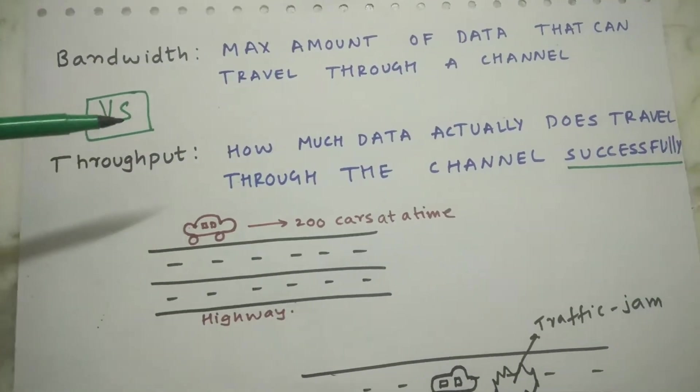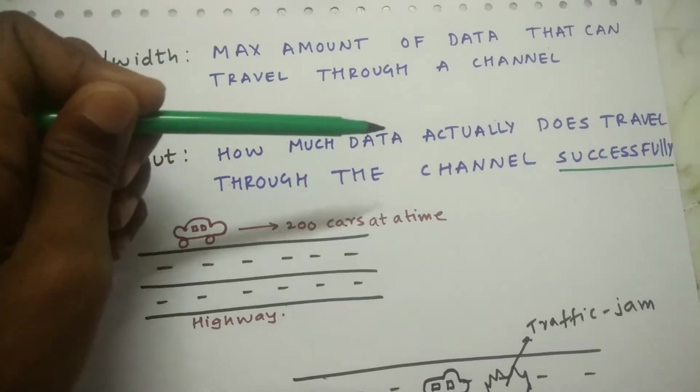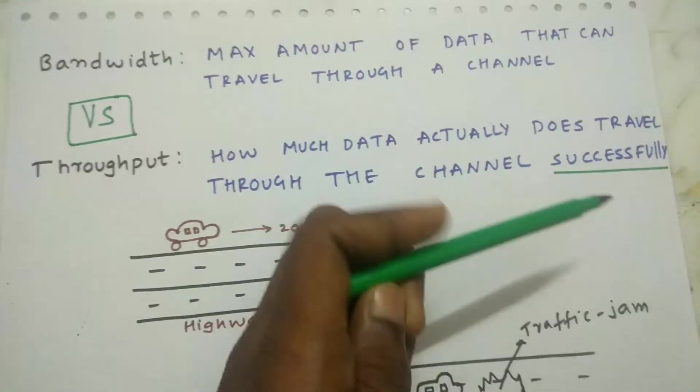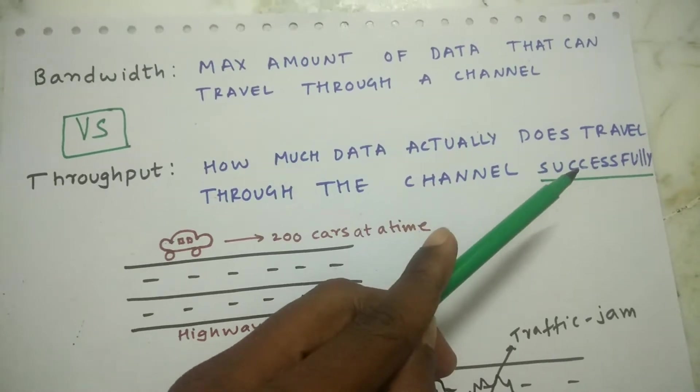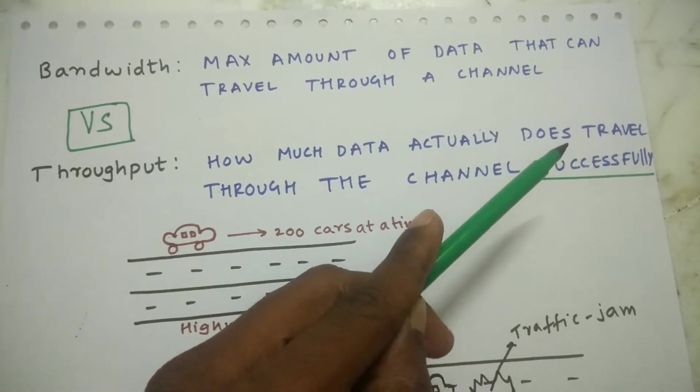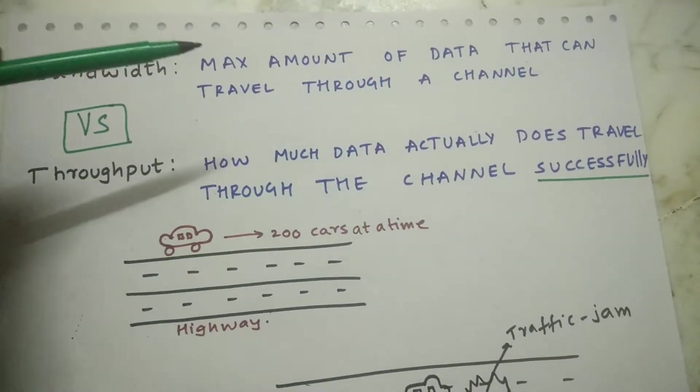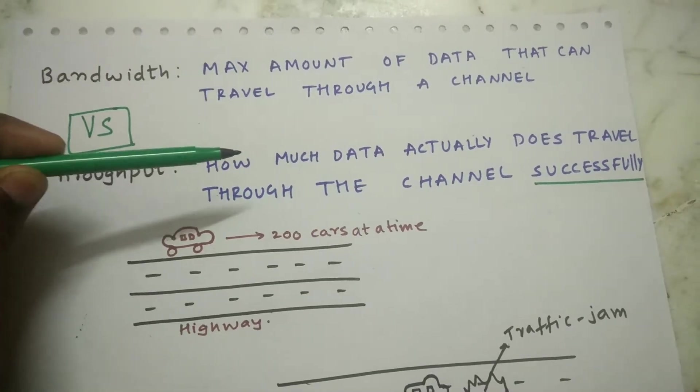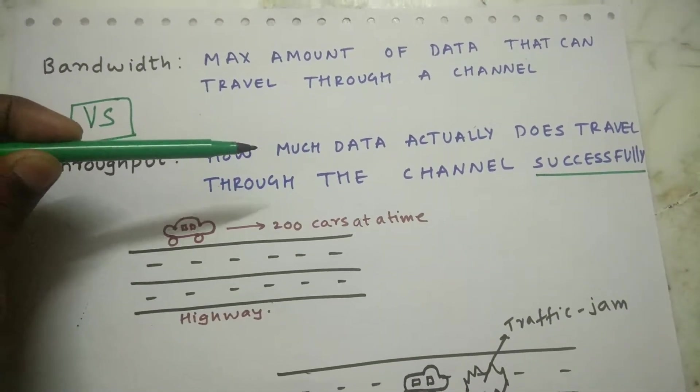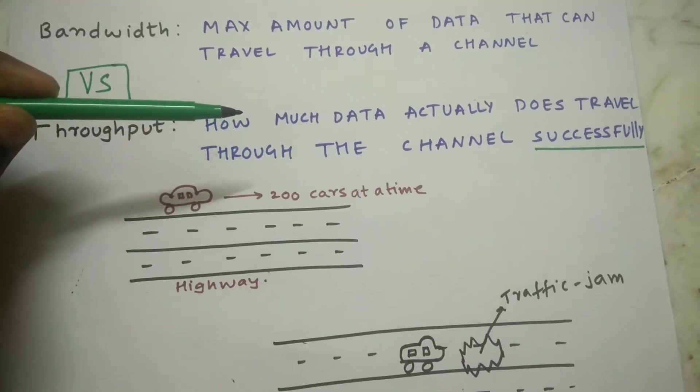So what's throughput? How much data actually does travel through the channel successfully over a period of time? To get more clarity between these two statements, I'm gonna illustrate using an example for your better understanding.